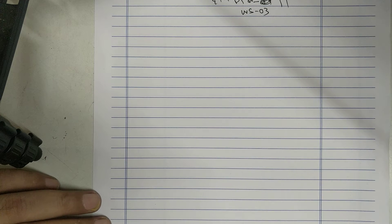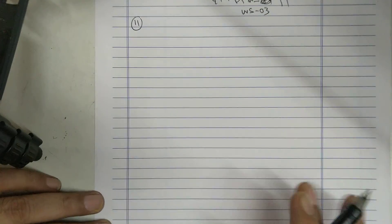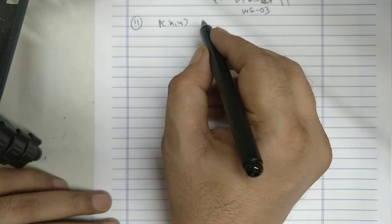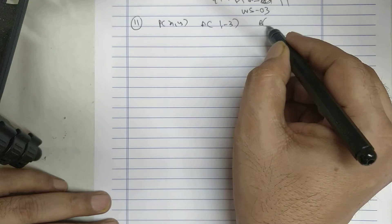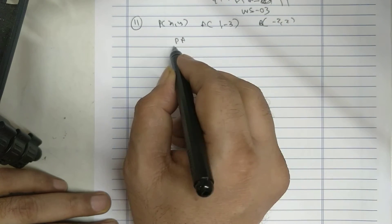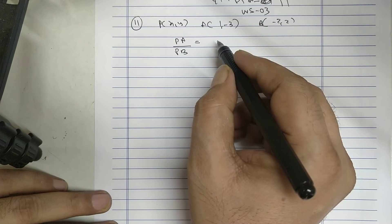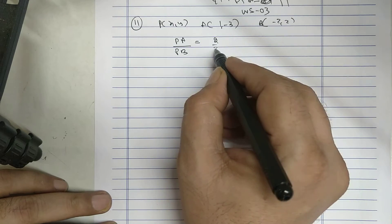Ninth distance, video number 11, worksheet number 3. See sum number 11. P is XY, A is 1 and minus 3, B is minus 2 and 2, PA upon PB is 2 upon 3.